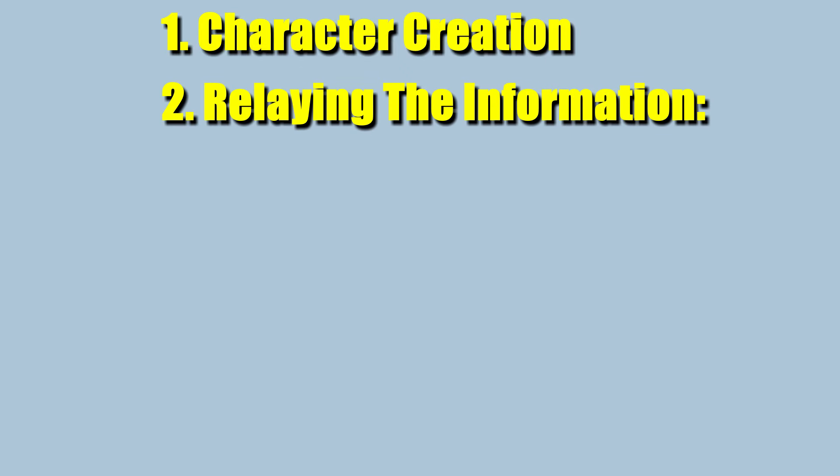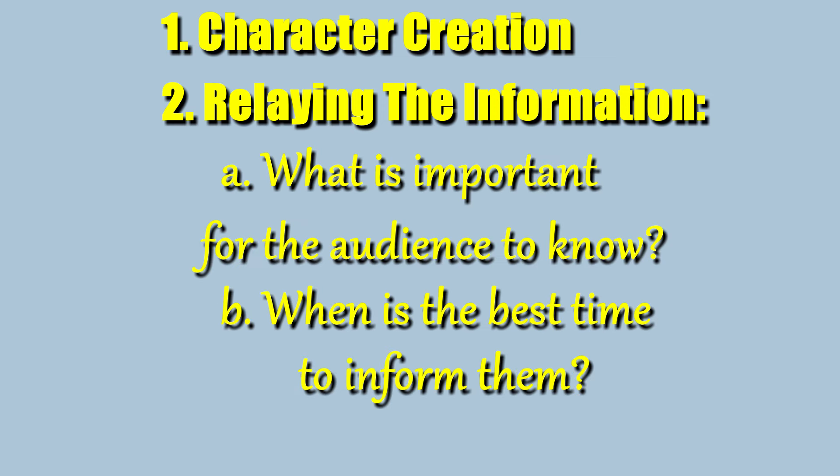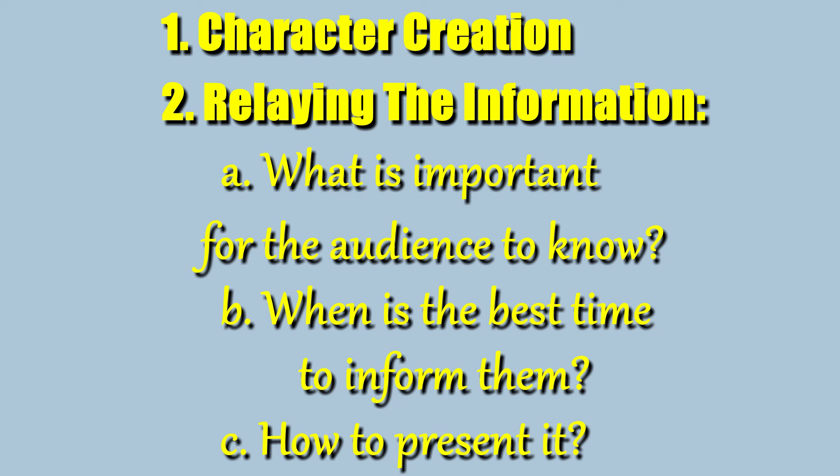Second is the process of relaying the necessary amount of that information to the audience at appropriate times over the course of the story. The writer needs to figure out what is important for the audience to know, when is the best time to inform them, and how to present the information. This is when you reveal within the story that the character has superpowers, or that they can't read, or they're afraid of snakes and why, or they're really quiet at school but really loud at home, or that they were raised by their grandparents, or they used to date the antagonist's cousin, etc. This second process is what we'll be focusing on in this series.